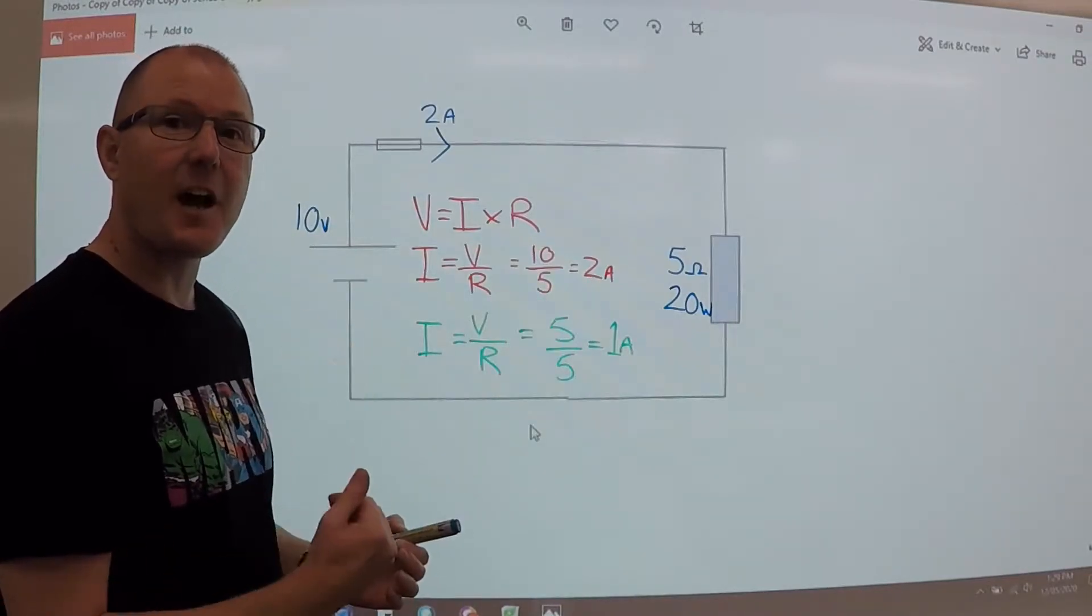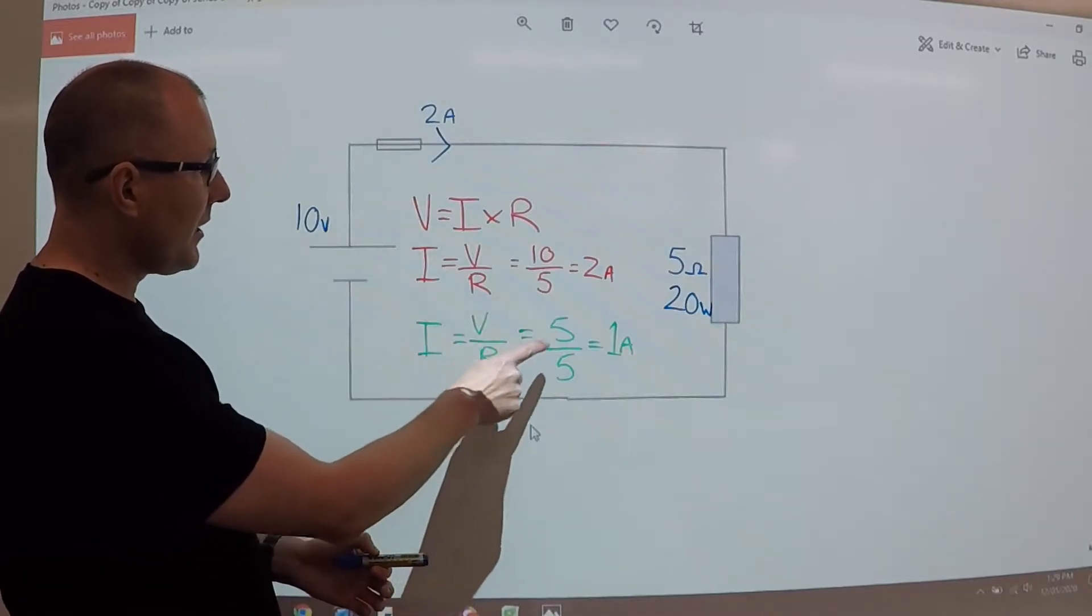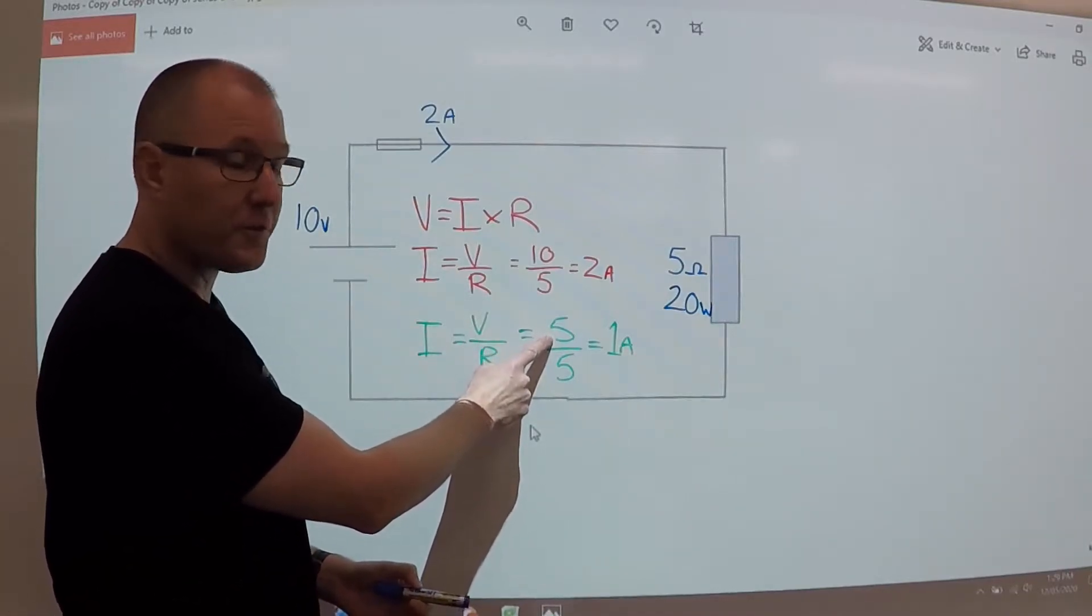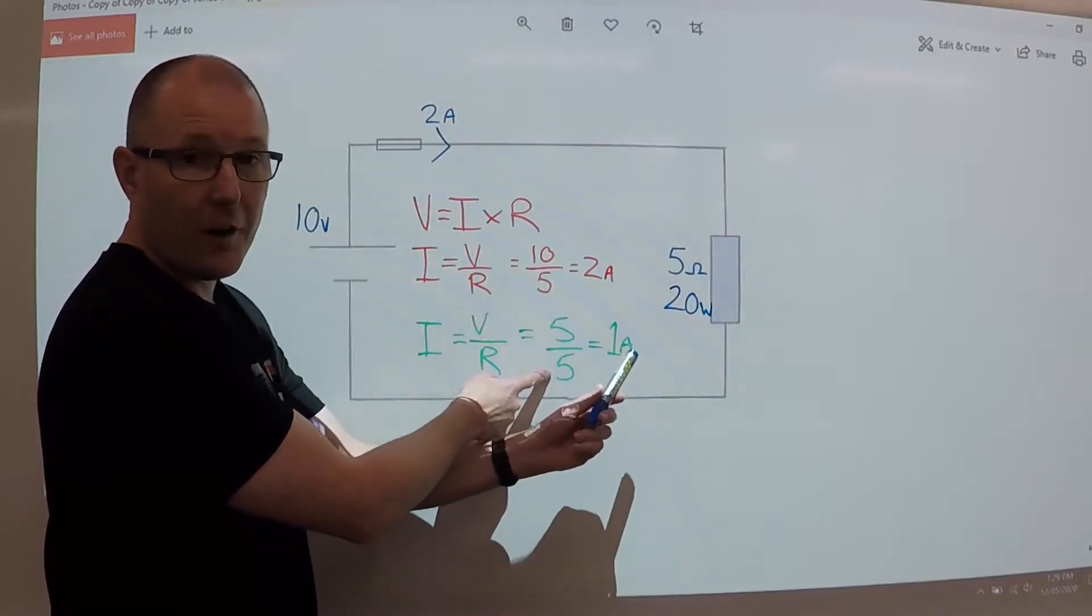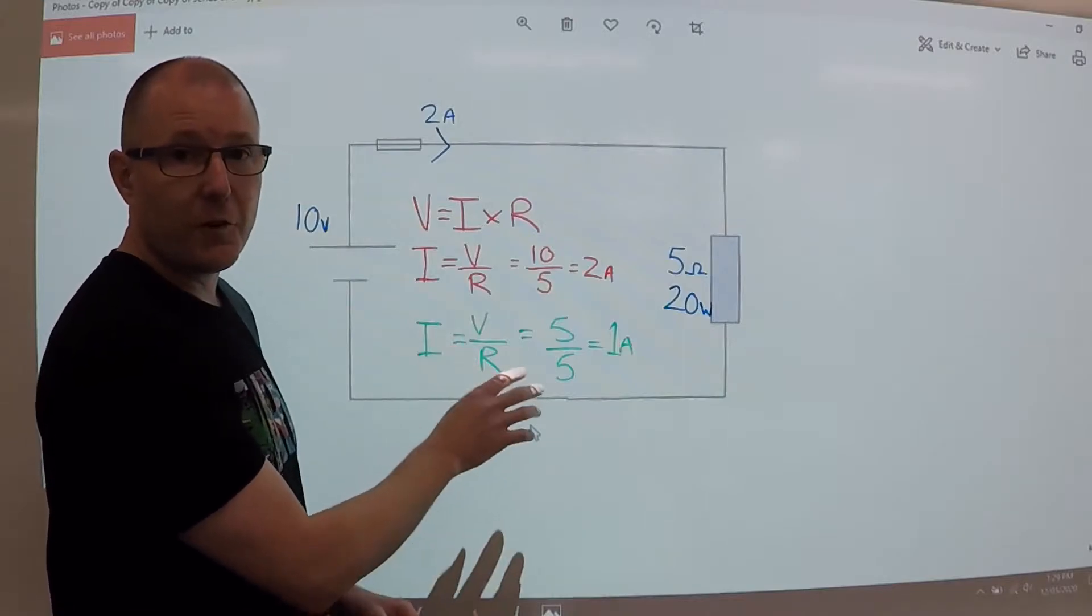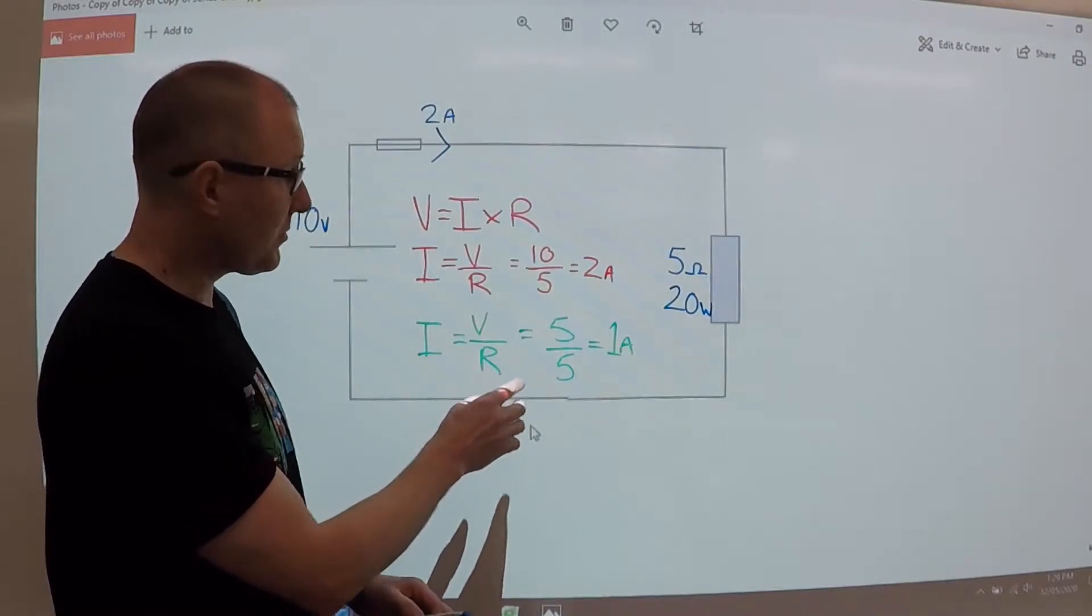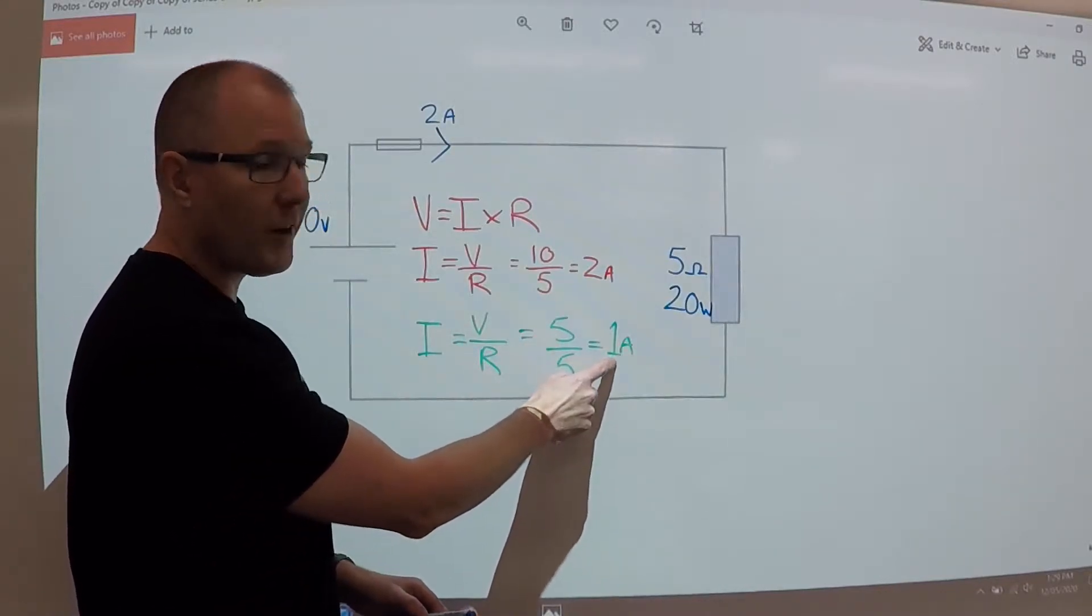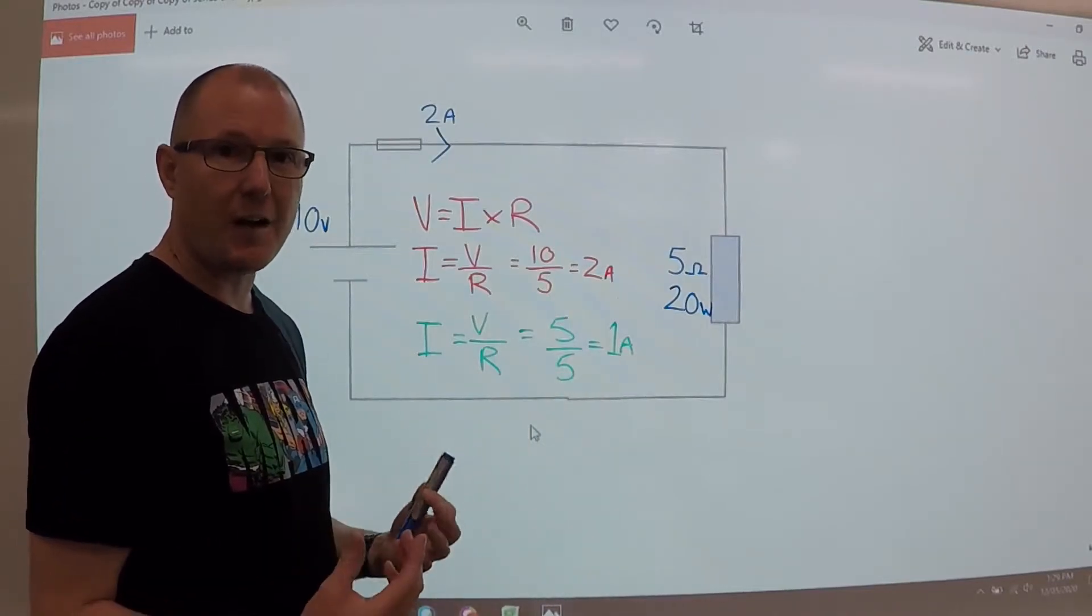Now let's halve the voltage. So now let's say we've got 5 volts and 5 ohms, so the resistance stays the same. Same formula, voltage divided by resistance, 5 divided by 5 is 1 amp, so it's halved.